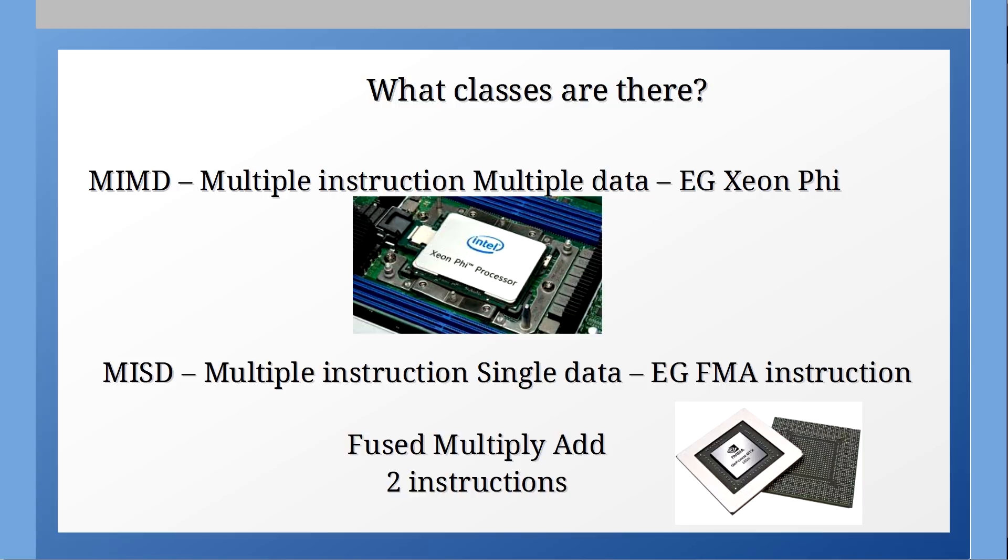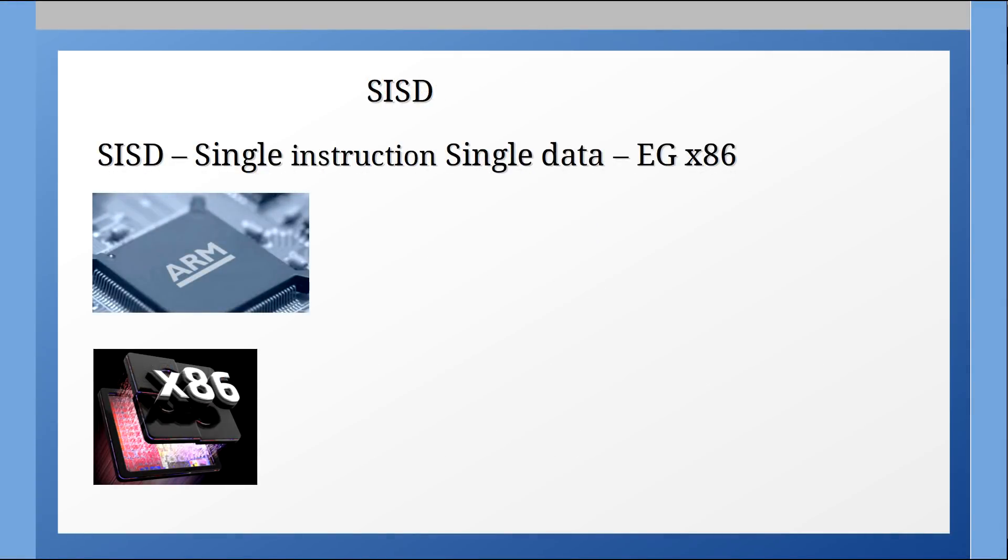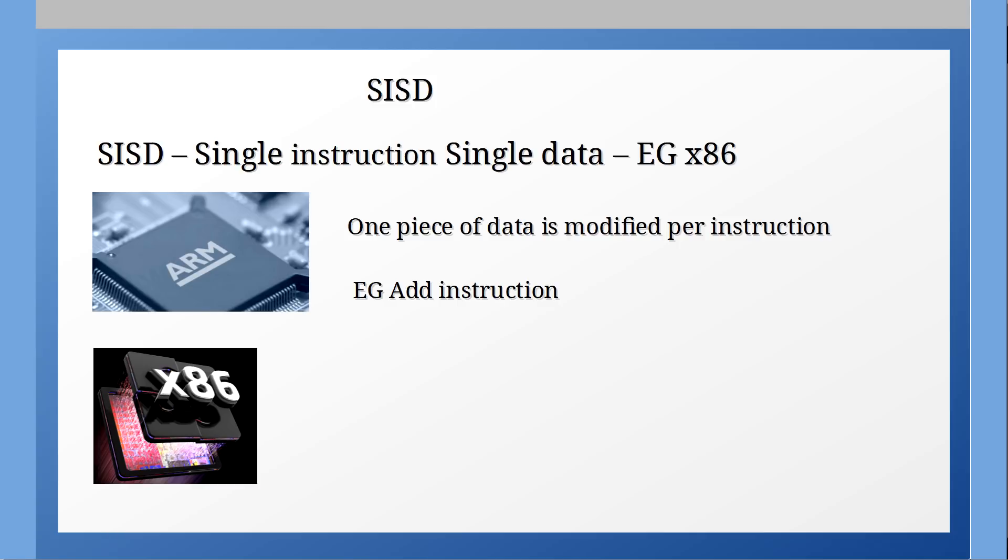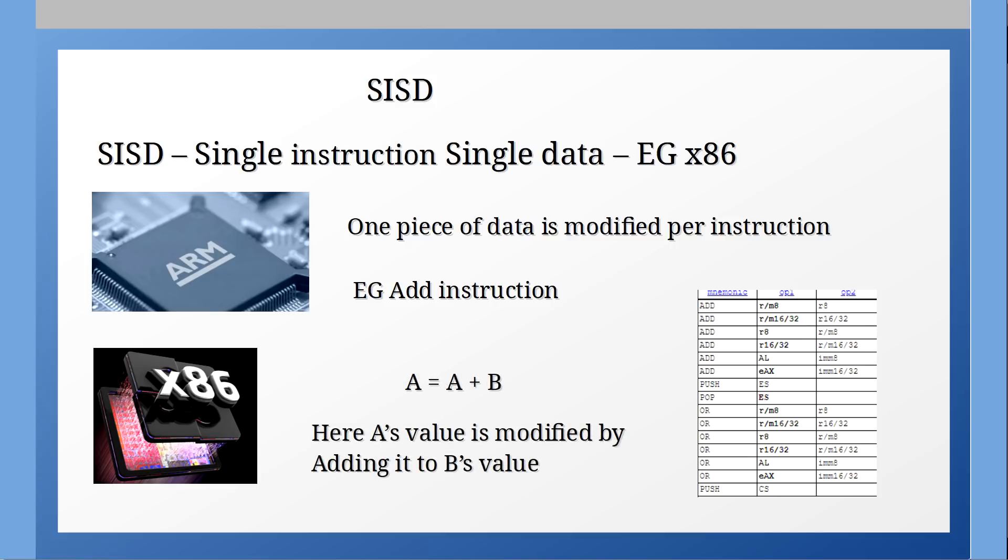So first we'll look at the characteristics of SIST instruction sets and what that means. This is the type of instruction set that x86 and ARM are. SIST stands for single instruction, single data. What this means is that I can operate on a single piece of data with a single instruction. For example I can do a single addition with a single instruction.